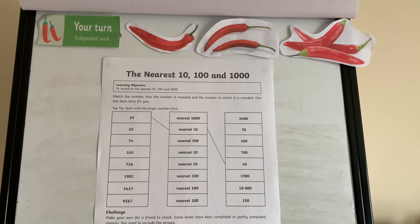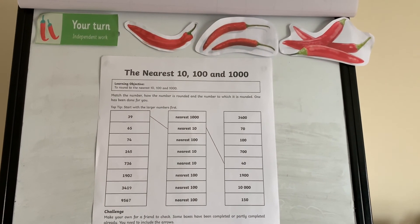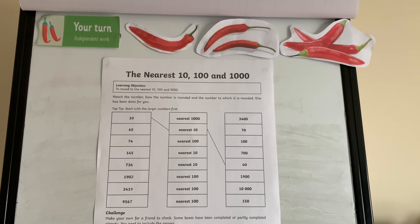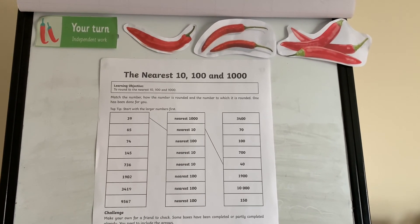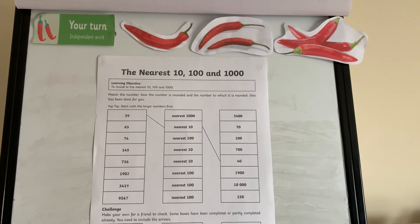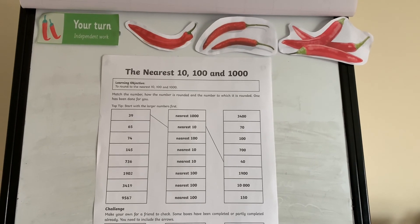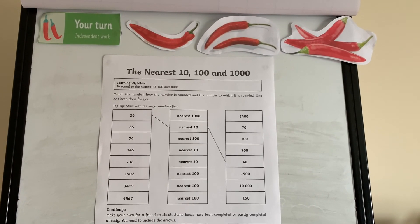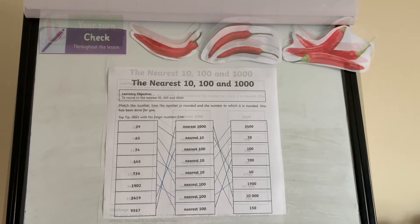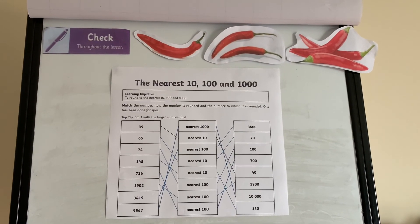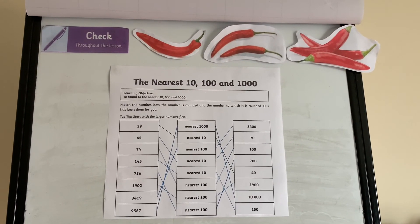Now that you've had a go at rounding to the nearest 10, 100 and 1,000 separately, I'd like you to have a go at a final activity where you use all of it together. It's a matching activity — look at the numbers on the left, then whether it's rounded to the nearest 10, 100 or 1,000 in the middle, and the answers on the right. The top tip is to start with the larger number first. Jot them down in your books and then come back to check — I'll also send the answers on parent mail.